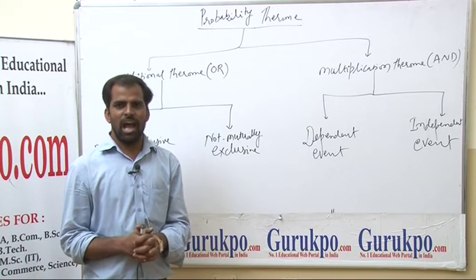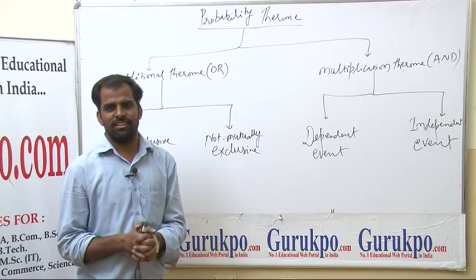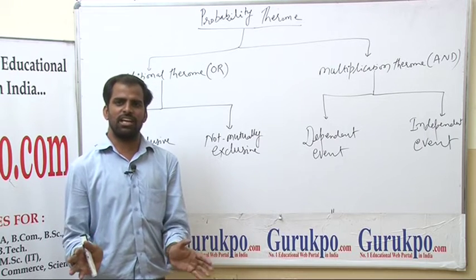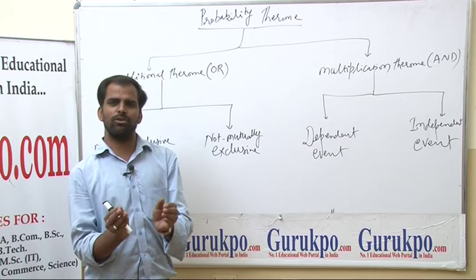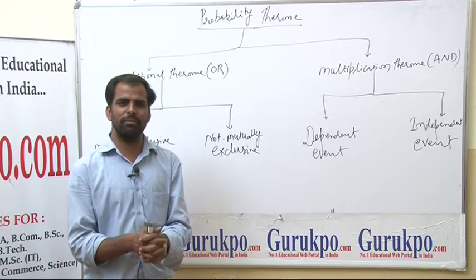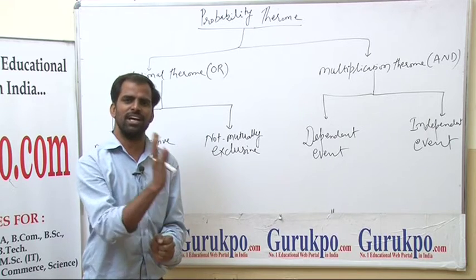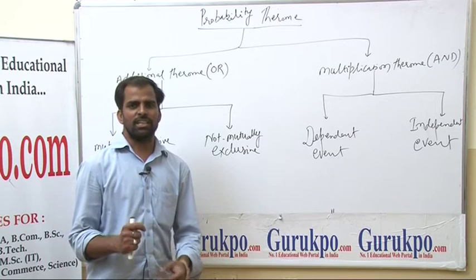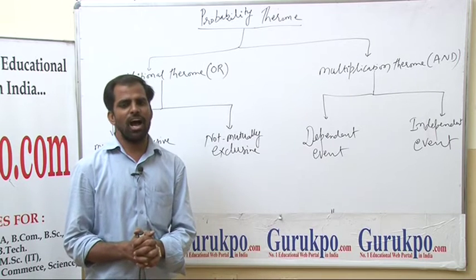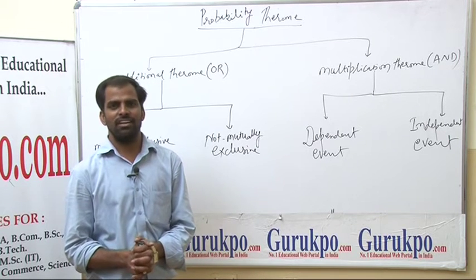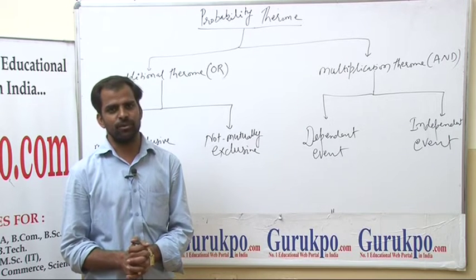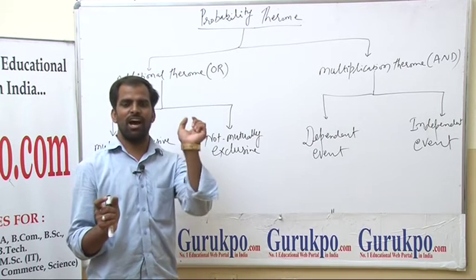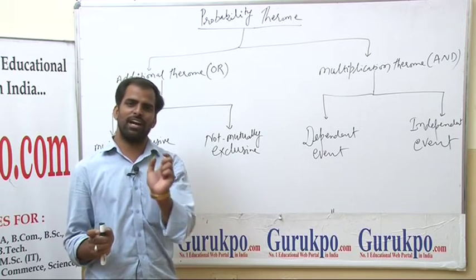Not mutual exclusive events: when two or more events occur together and overlap with each other, then it is called not mutual exclusive. Dho ya dho se jada ghatnayein jo ek saath ho sakti hain aur jo overlap karti hain wo not mutual exclusive hain. For example, from a deck of cards, drawing a red card or a heart card — because heart cards can also be red, so there is an overlap.